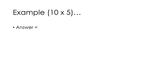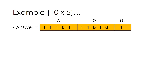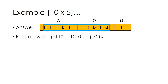Now we calculate the final answer. The answer is made by combining A and Q. The final answer is 1 1 1 0 1 1 1 0, which is nothing but minus 70.